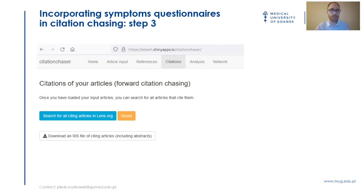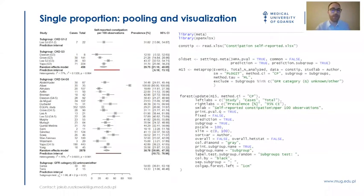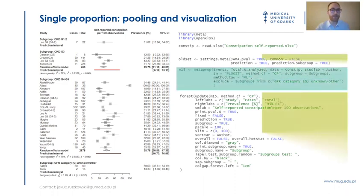The downloaded file can be imported for abstract and title screening into RAYYAN, one of the free applications for abstract and title screening. It is recommended to meta-analyze single proportions data such as prevalence using GLMM. This is easy to conduct with the meta package, which fits the random intercept logistic regression model. Here I show the code used to meta-analyze and plot the data.